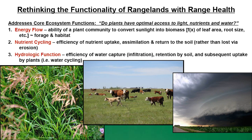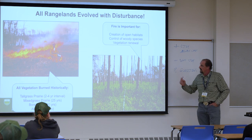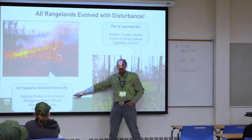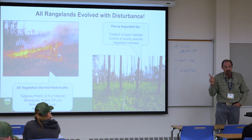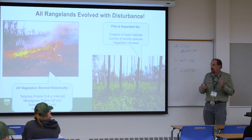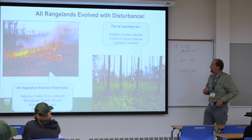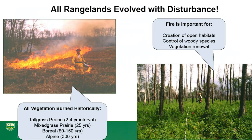All rangelands have evolved with disturbance — this is really important to understand. It's not that we should stop all disturbance. They evolved with fire. Fire has been around way before humans ever entered these systems. Some of our rangelands, like tall grass prairie, burned every two to four years historically — incredibly high fire frequencies. Some places like Texas are way more advanced than we are in Alberta. They have advocacy groups that work with and train ranchers to use fire on a regular basis, because it is the lowest-cost economic control of woody plant encroachment.